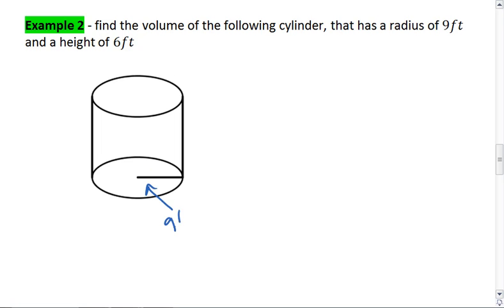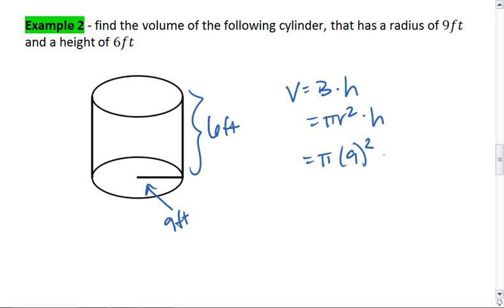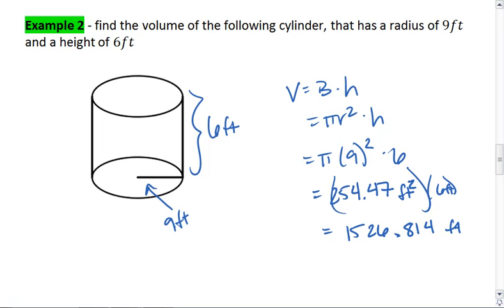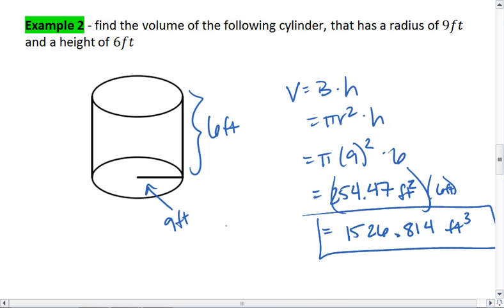If this is a radius of 9 feet and a height of 6 feet, I know that volume is the area of the base times height, or we can say pi r squared times h, where r is 9 and the height is 6. Multiplying this all together, I find that 9 squared is 81, and pi times 81 is going to give me the area of the base, which is 254.47 feet squared. We'll multiply this number by the height of 6 feet. So my total volume is 1526.814 feet cubed.